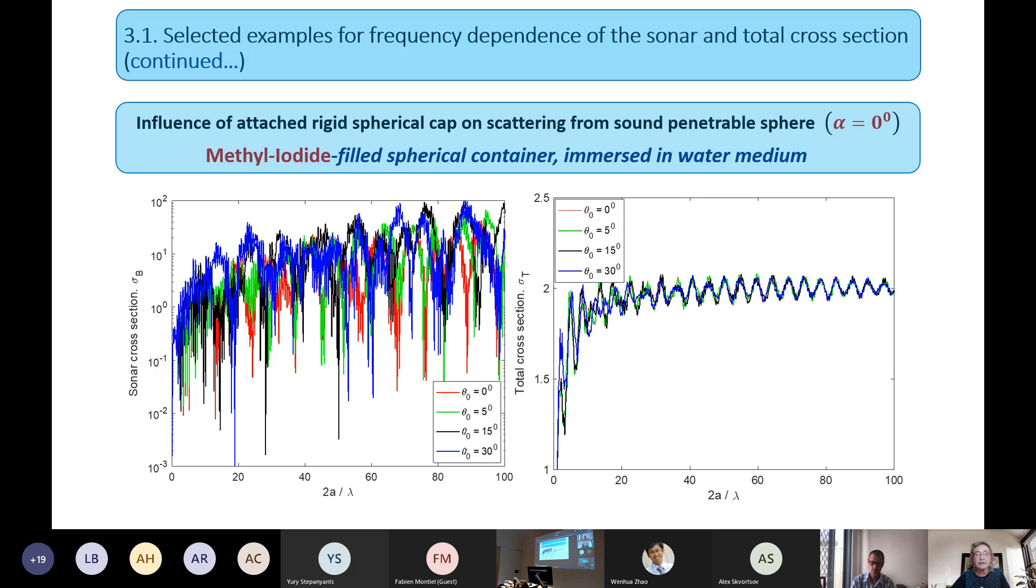On the next figure, we see that growth of backscattering is not so dramatic as before for ethanol sphere. It's explained by higher density of methyl iodide compared to ethanol. Ethanol on the previous slide, and here methyl iodide sphere.